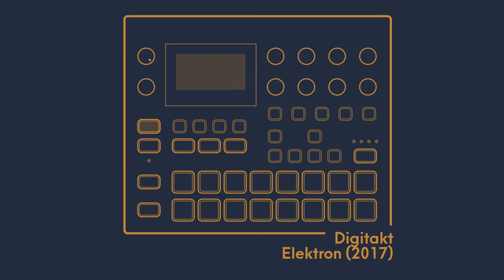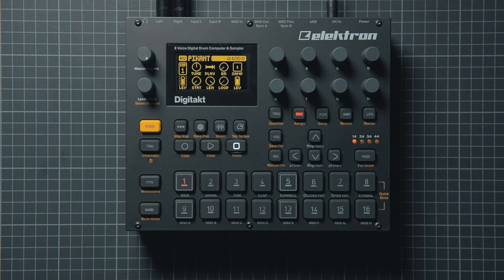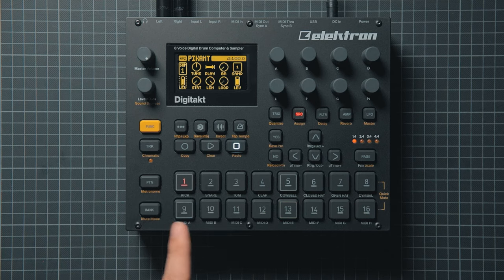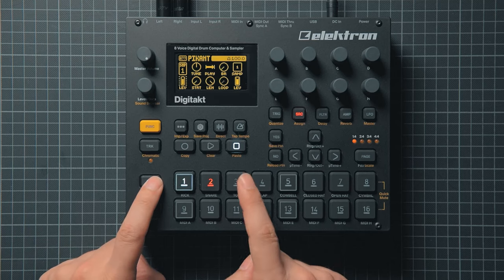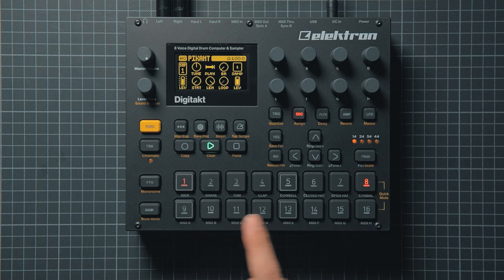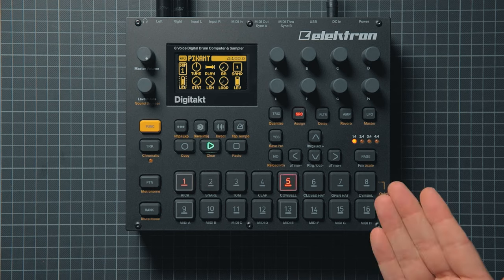This is the Electron DigiTact. It's quite a bit more advanced, but the basic principles are the same. It can save many many projects with 8 banks of 16 patterns each. You'll probably never run out of space for patterns with this one. Let's select an empty, unlit pattern and press play to start the sequencer. As you can see, the 16 steps are arranged differently here, into two rows — half the bars on top, the other half below.